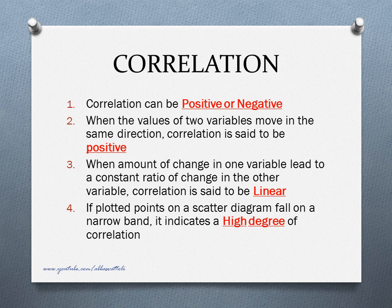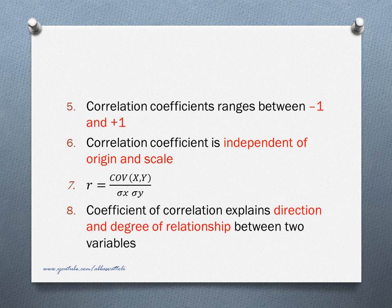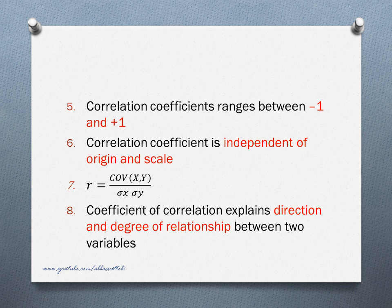If plotted points on a scatter diagram fall on a narrow band, it indicates a high degree of correlation. Narrow band means a straight line. Correlation coefficient ranges between minus 1 and plus 1. Minus 1 means perfect negative correlation. Zero means no correlation. Correlation coefficient is independent of origin and scale. Correlation coefficient R can be calculated as covariance of X and Y divided by sigma X times sigma Y.